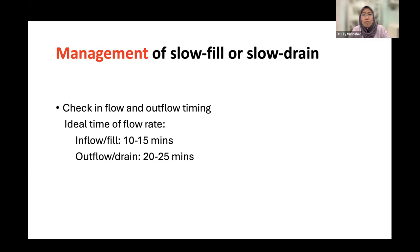When there is slow fill or slow drain without obstruction, the normal fill time for a 2-liter bag is about 10 to 15 minutes, and the outflow after the dwell time is about 20 to 25 minutes. If inflow or outflow is prolonged — for example 45 minutes — even with a shaking maneuver to speed drainage, you should suspect omental wrap or catheter entrapment as the cause of slow fill or slow drain.